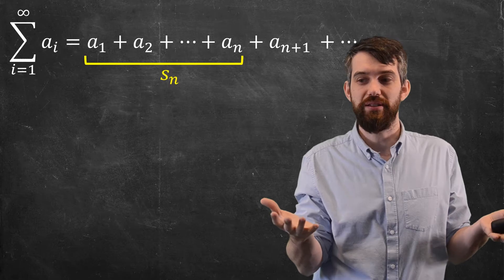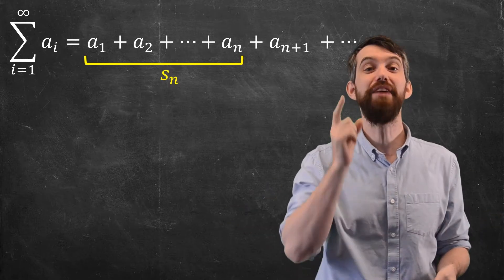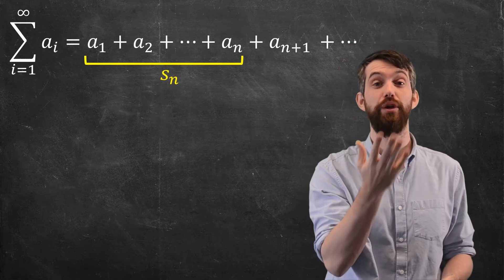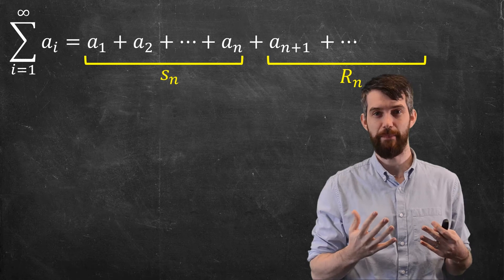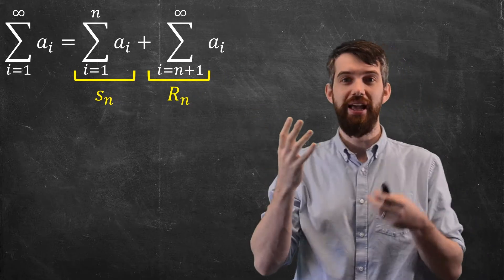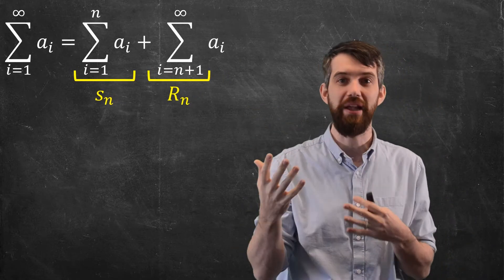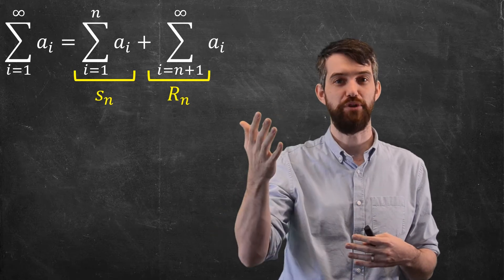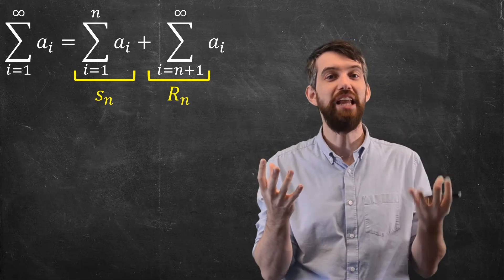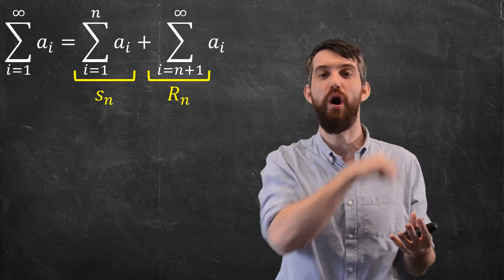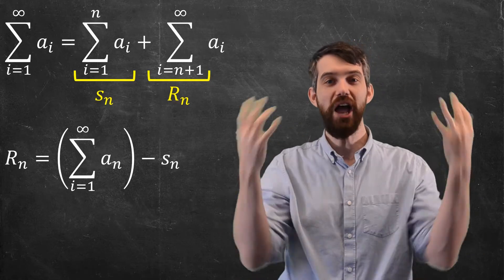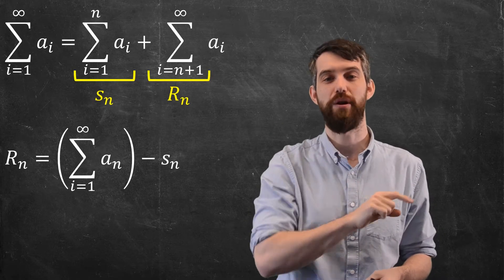But what about everything else? The partial sum goes up to AN, let's give a name to AN plus 1 all the way to infinity, and I'll call it the remainder, the R sub n. Using summation notation, SN is the sum from 1 up to n, and the remainder is a sum from n plus 1 all the way up to infinity. We're breaking the series up into a finite portion, the partial sum, and then this infinite tail. The remainder term is the entire series subtracted off the partial sum.